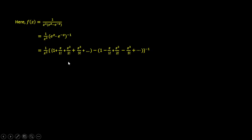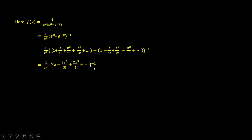From this, we observe: the z/1! terms add to give 2z. The z²/2! terms cancel (even order terms cancel). The z³/3! terms add to give 2z³/3!. So even-order terms cancel and odd-order terms survive, giving us: 2z plus 2z³/3! plus 2z⁵/5! plus 2z⁷/7! and so on.